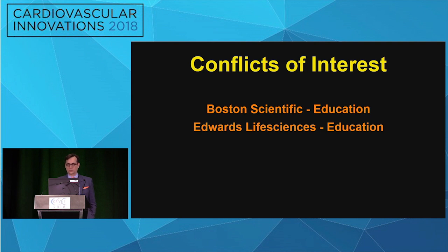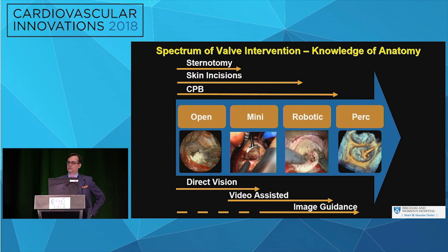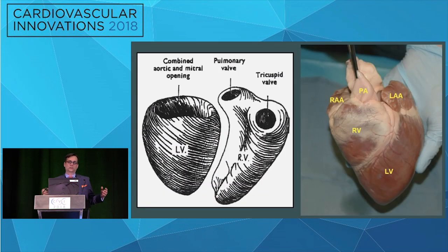Anatomy is critically important to understanding how to intervene on valve dysfunction. I have a couple of conflicts of interest — I do some anatomic work with both valve companies on the spectrum of heart valve intervention. As we become more percutaneous in our approach, image guidance becomes even more critical, our planning becomes more critical, and our knowledge of anatomy becomes more critical to achieving successful outcomes.